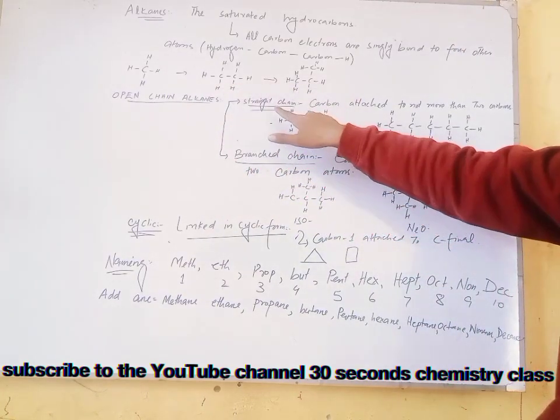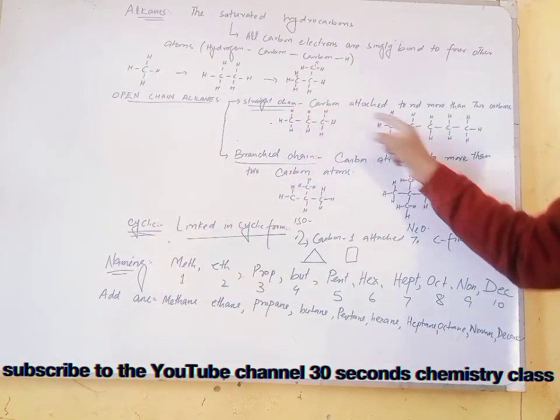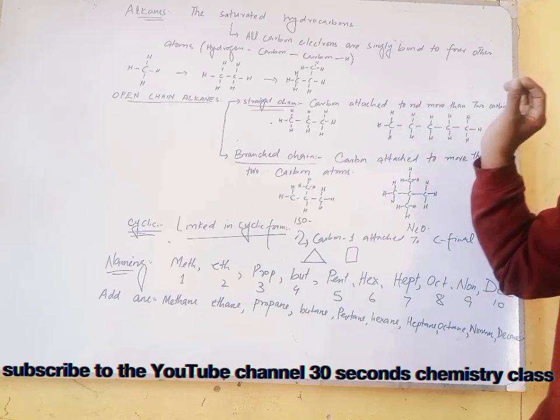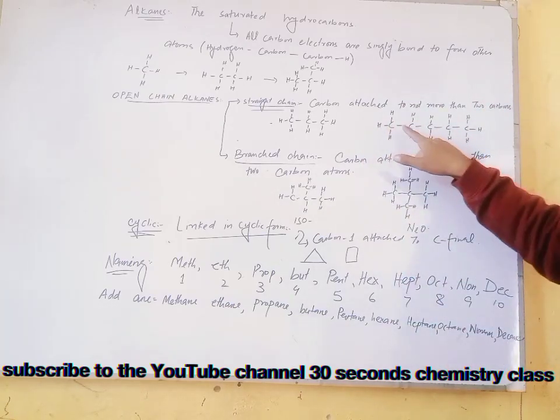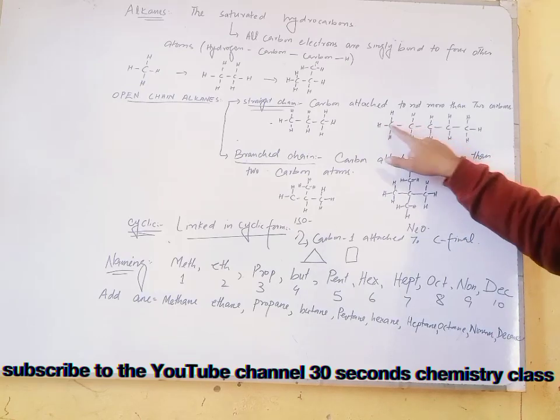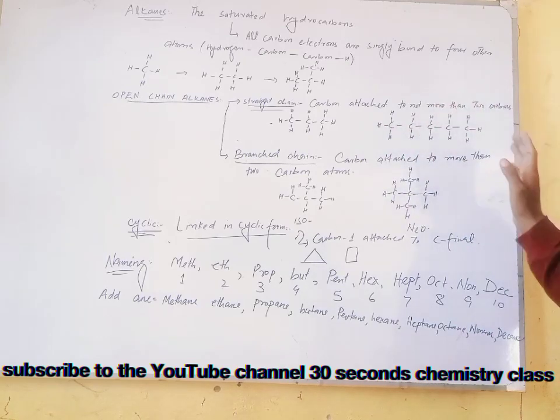Open are also of two types, straight chain. Here each carbon will not attach to more than two carbons. Look at this example. This carbon is attached to two carbons, not more than two.